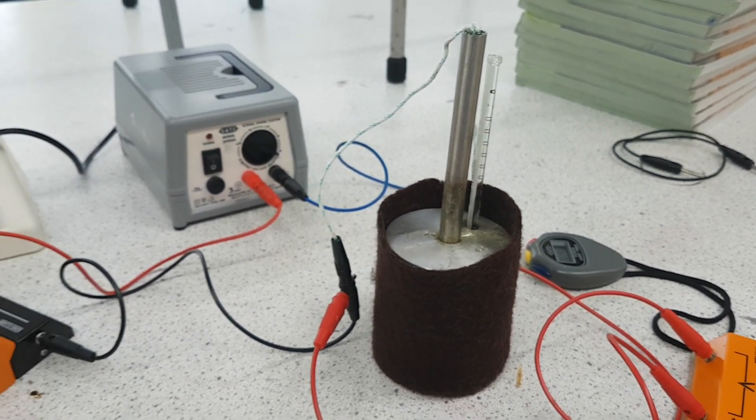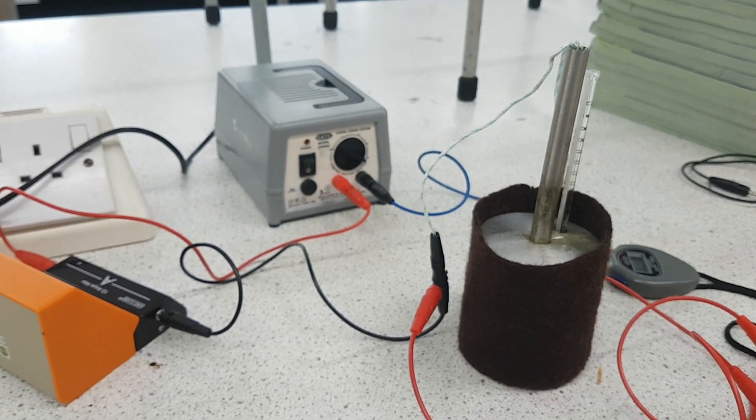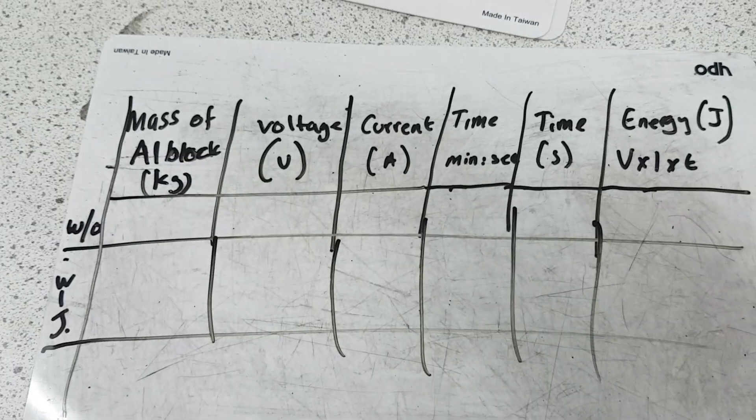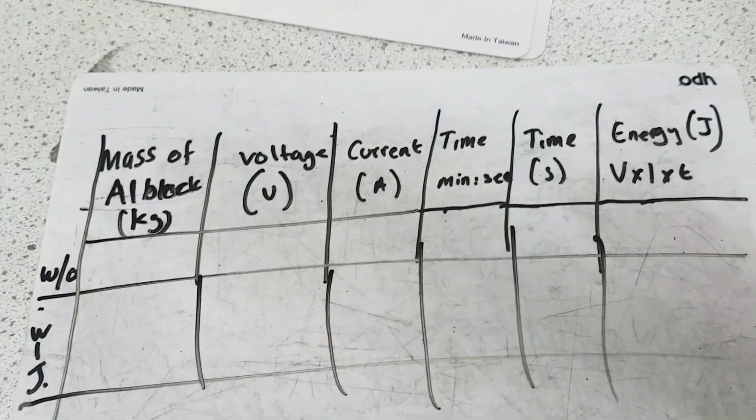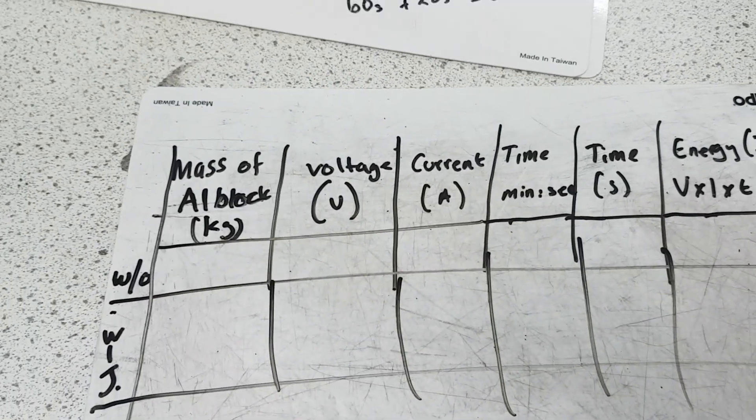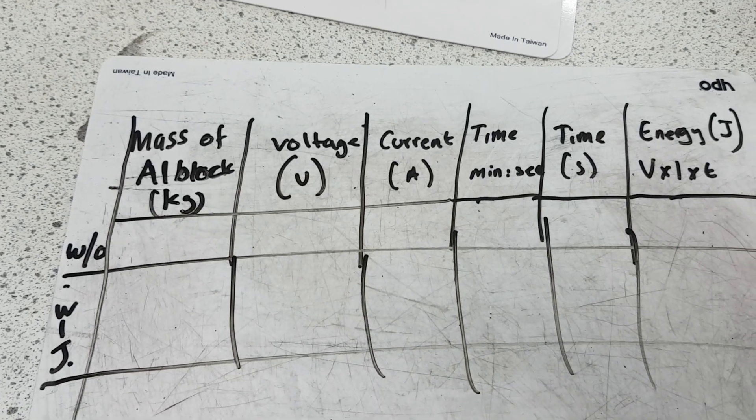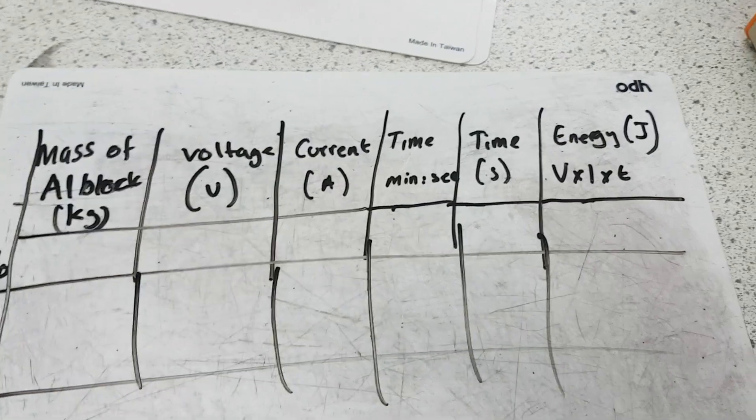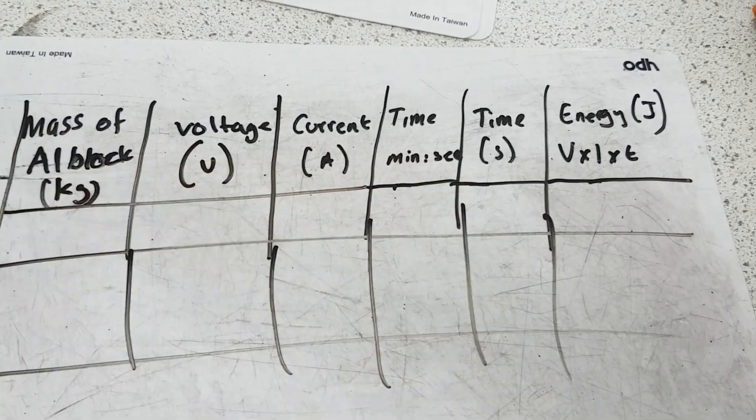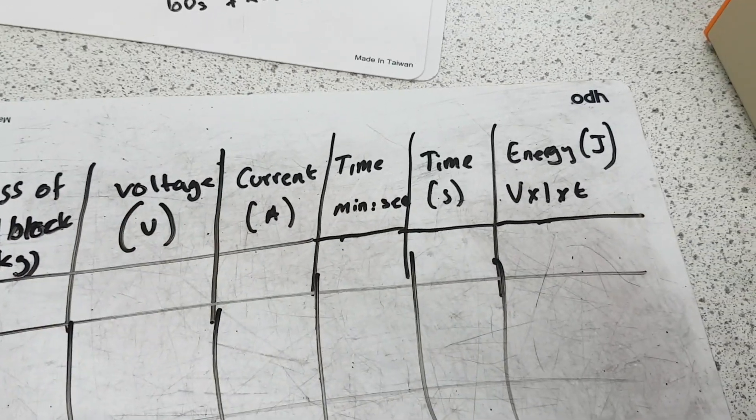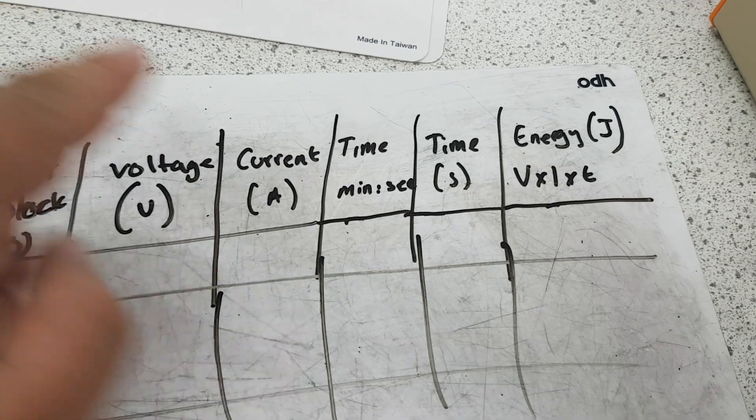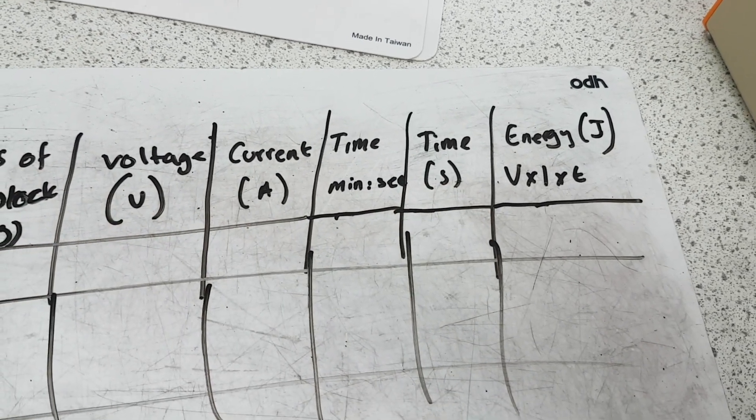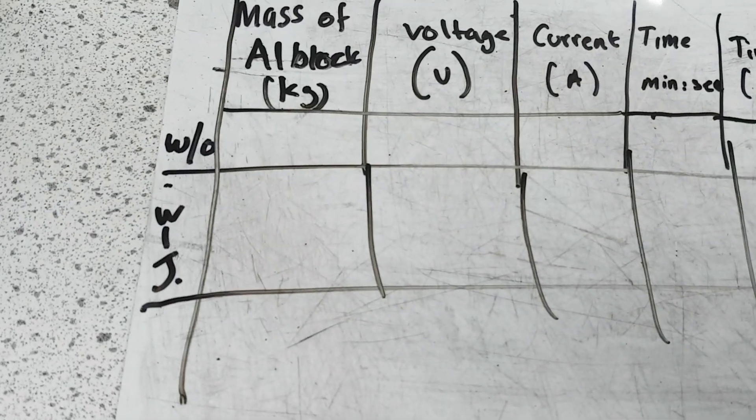Next, what I'm going to look at is, what the results table might look like. So here's a rough sketch of the table, and what it might look like. So I've got the mass of the block, which is measured in kilograms, voltage, which is measured in volts, current in amps. I'd record the raw time in minutes and seconds, and then convert it to seconds here. Then I'd calculate the energy using voltage times current times time.